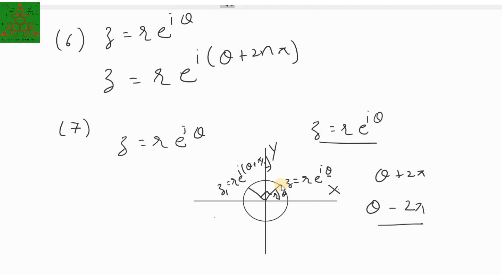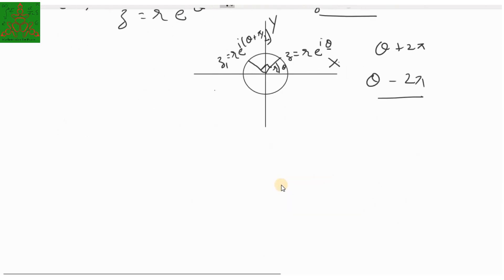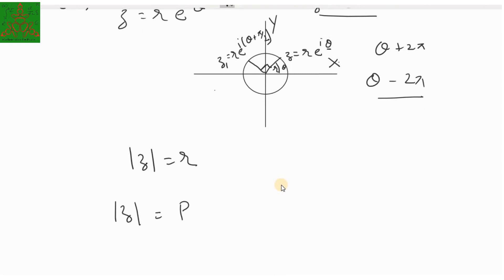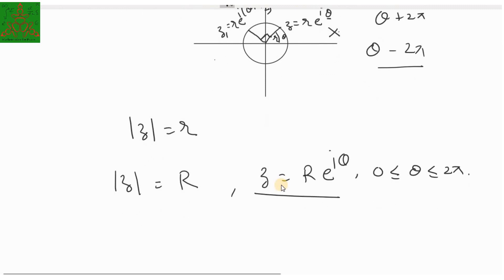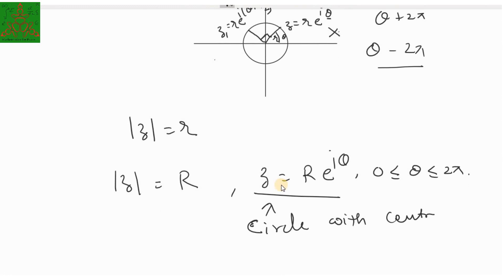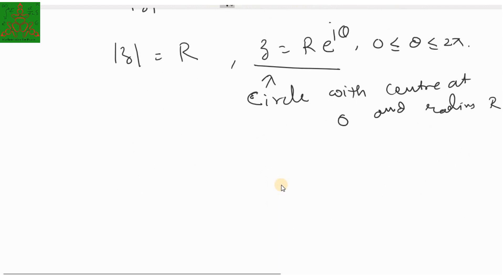In particular, if you increase θ by 2π, the point makes one full round of the circle and comes back to the same point. If you decrease by 2π, you go in the clockwise direction and return to the same point. So θ − 2π represents the same point. The modulus of z is r, and if you fix radius r, z can be represented as r·e raised to iθ where θ ranges from 0 to 2π.